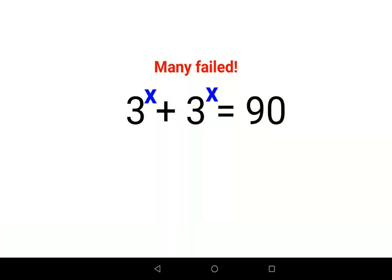Welcome everyone. Today we are going to solve this very nice indices problem: 3^x + 3^x = 90. Many people failed because they did not understand how to do these kinds of questions in a stepwise method.